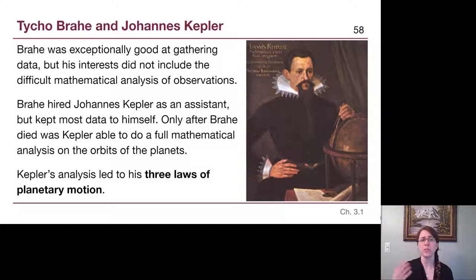Brahe, although he hired Kepler, kept most of the data secret to himself and gave Kepler just small pieces that he wanted a specific analysis done for. It was only after Brahe died somewhat unexpectedly that Kepler was able to do a full mathematical analysis on the locations of all of the planets and find patterns in that data. Kepler's analysis allowed him to write down three laws of planetary motion that are still accurate and useful to us today.